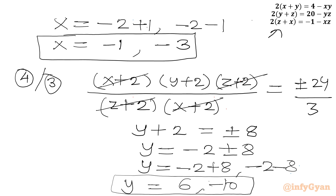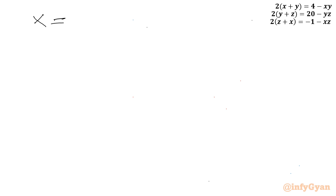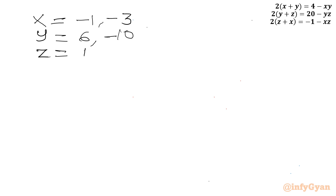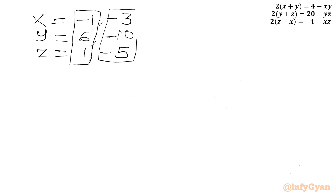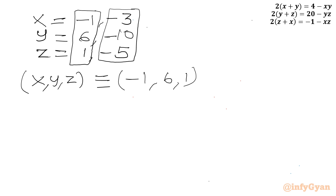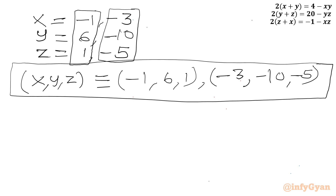So our answer is almost ready. The two values of x are minus 1 and minus 3, y is 6 and negative 10, and z is 1 and negative 5. So the first triplet is (x, y, z) = (−1, 6, 1), and the second triplet is (−3, −10, −5). This is our ultimate and final answer. This brings the end of this video — do not forget to like, share and subscribe.